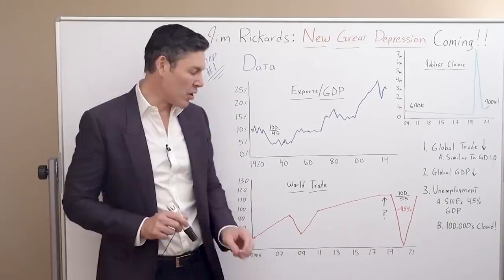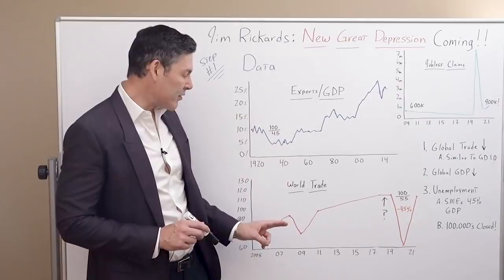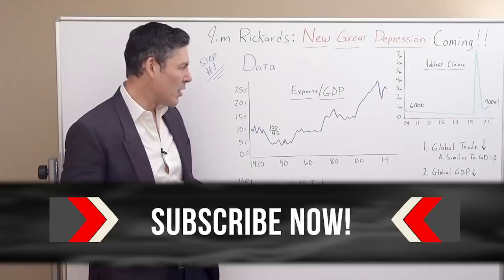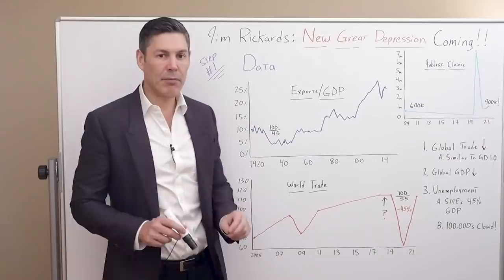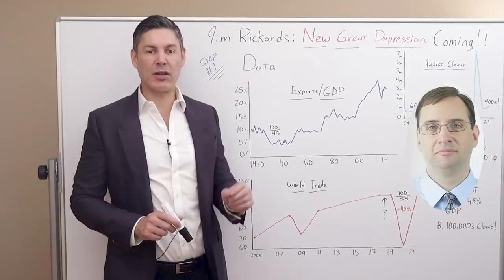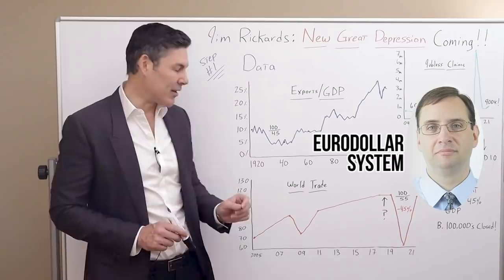Which takes us to our next chart, which starts at 2005 and goes all the way to 2021. This is a chart of world trade — obviously including exports. The reason I'm using it is because I couldn't find any recent data for exports as a percentage of GDP, so we'll do some back-of-the-envelope math. In 2005, it goes straight up to the GFC and then comes down significantly. It comes back up, but notice it's at a different trend line — which goes right back to what Jeff Snyder has been saying about the Eurodollar system breaking down in 2008 and never recovering.